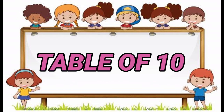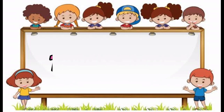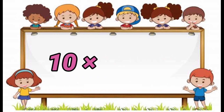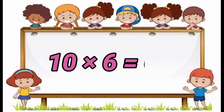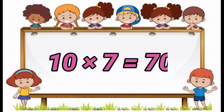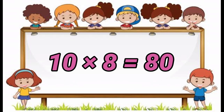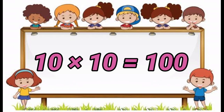Table of 10. 10 1's are 10. 10 2's are 20. 10 3's are 30. 10 4's are 40. 10 4's are 50. 10 6's are 60. 10 7's are 70. 10 8's are 80. 10 9's are 90. 10 10's are 100.